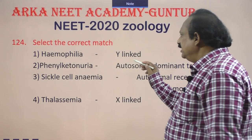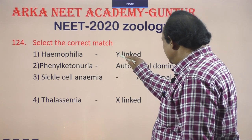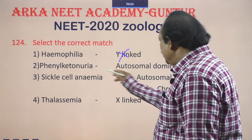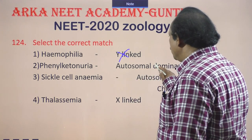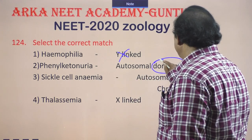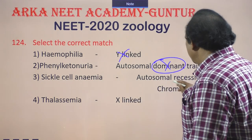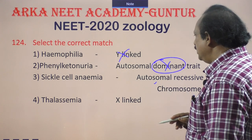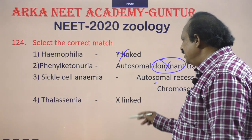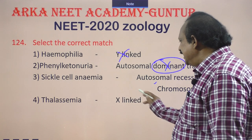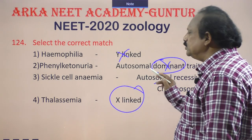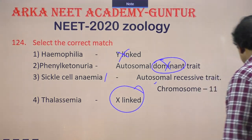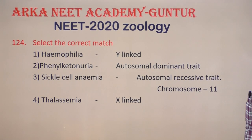Hemophilia is X-linked, not Y-linked. Phenylketonuria is autosomal recessive, not dominant — that statement is wrong. Sickle cell anemia is autosomal recessive and located on chromosome 11 — that is correct. Thalassemia is autosomal, not X-linked. Therefore, sickle cell anemia being autosomal recessive on chromosome 11 is the correct match.